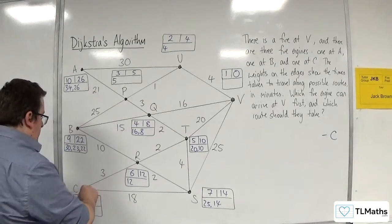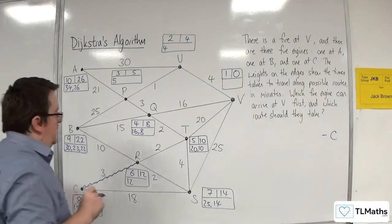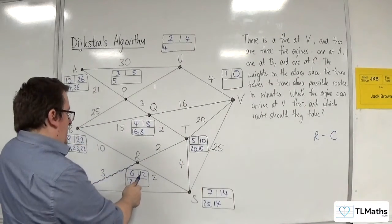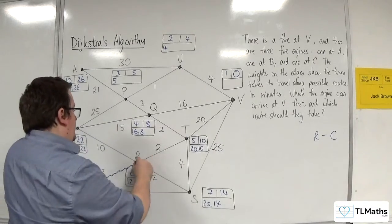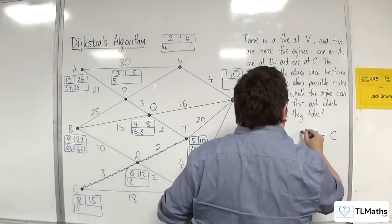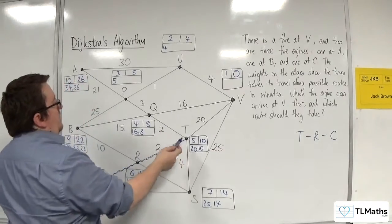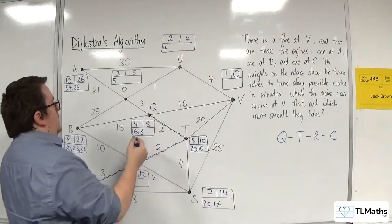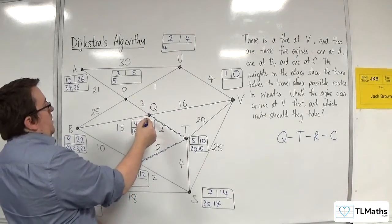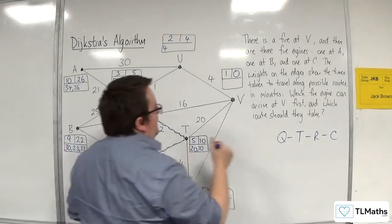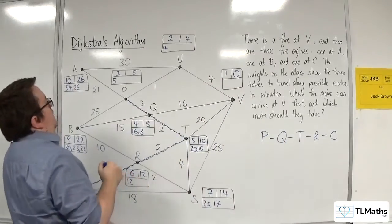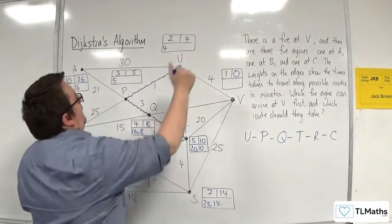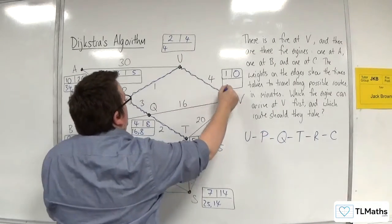So from C, we go 15, take away 3, gets us to R. Then 12, take away 2, gets us to T. Then from 10, take away 2, gets us to Q. Then from 8, take away 3, gets us to P. Then from 5, take away 1, gets us to U. And then from 4, take away 4, gets us back to 0.